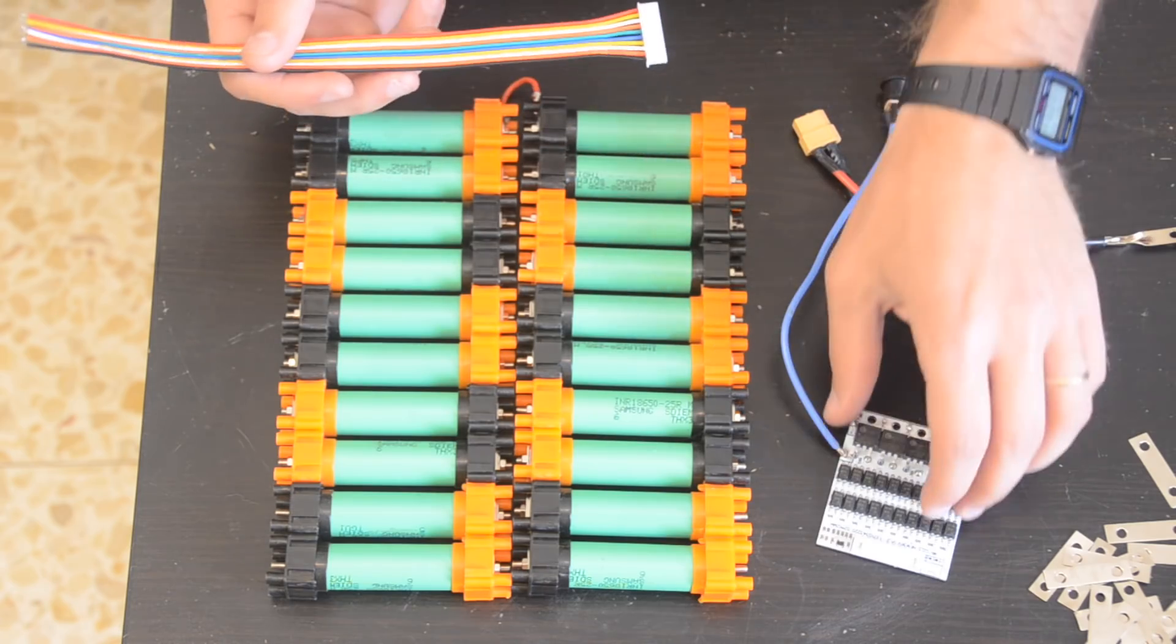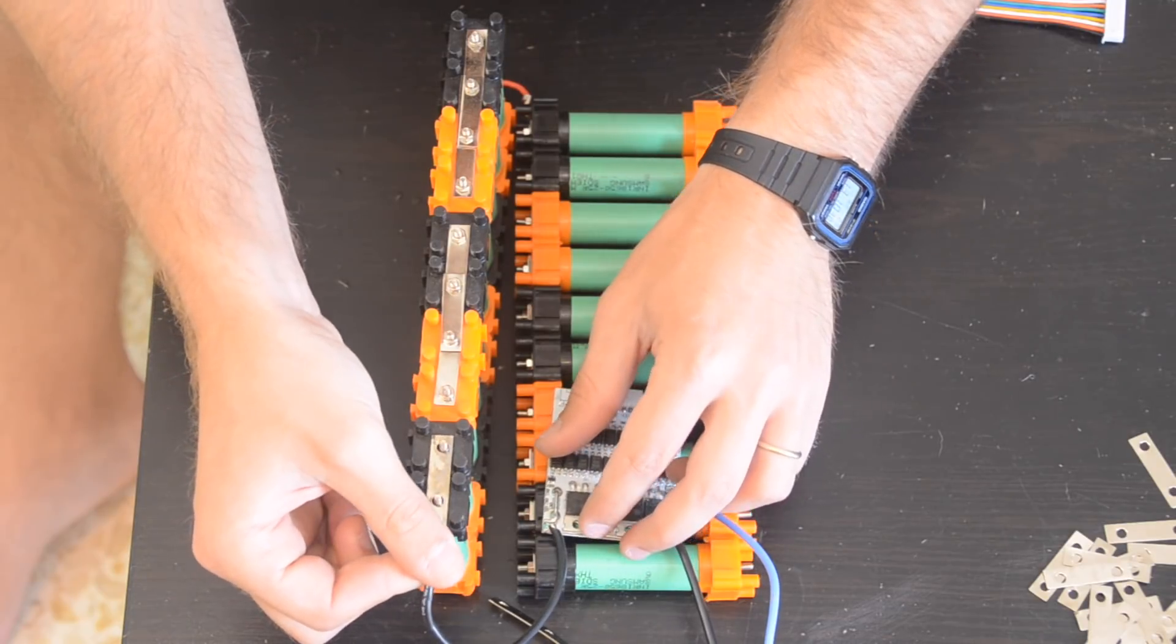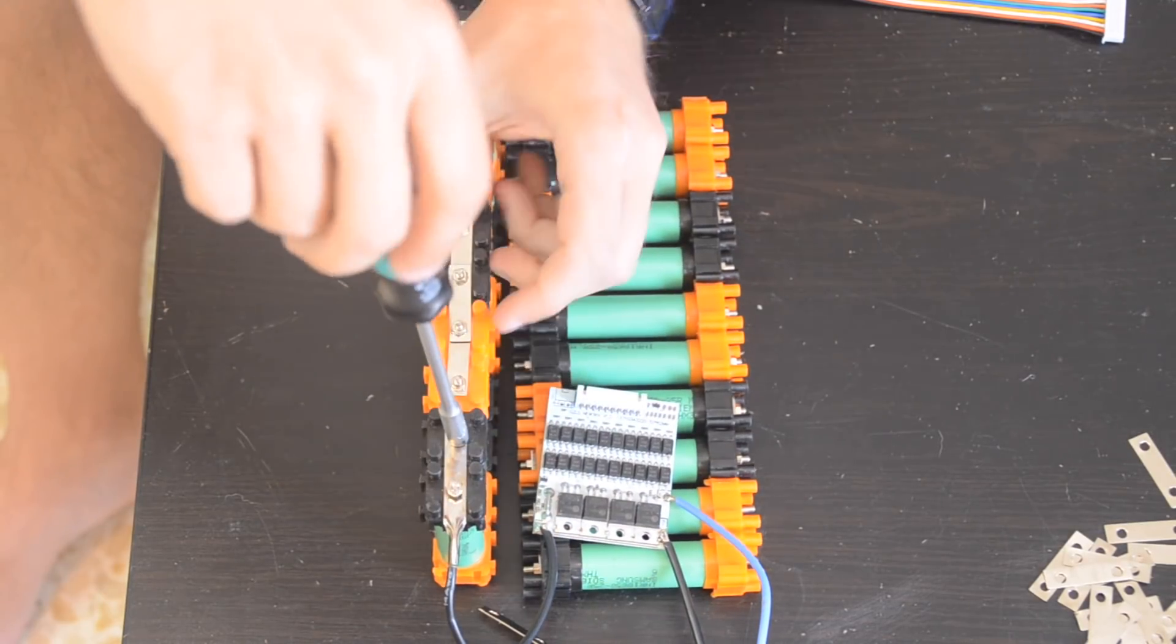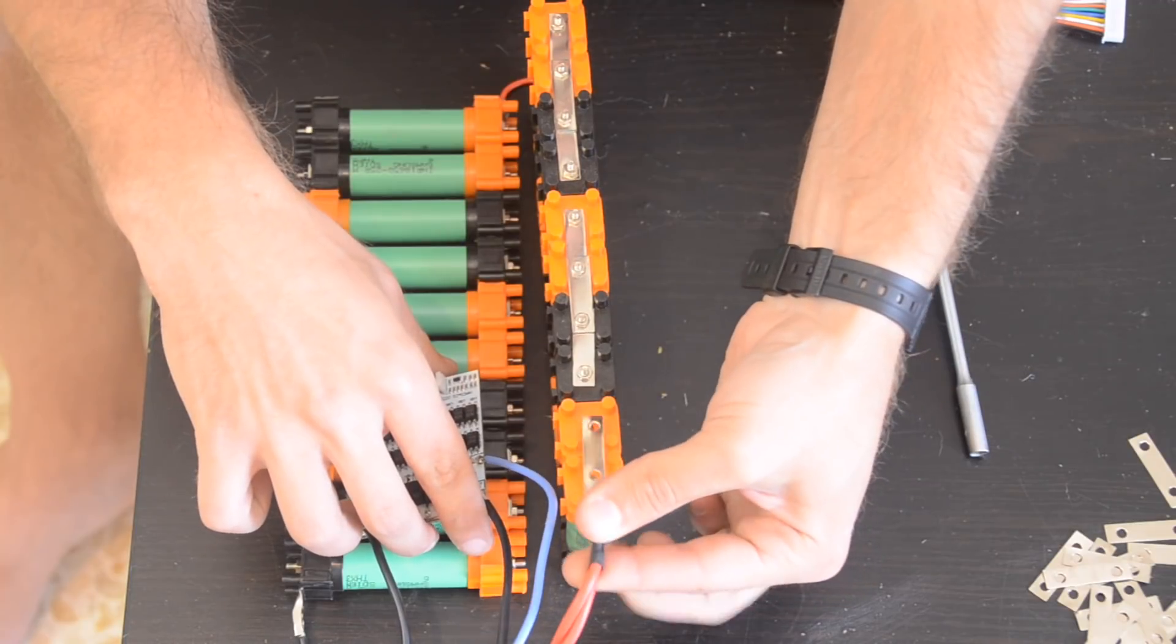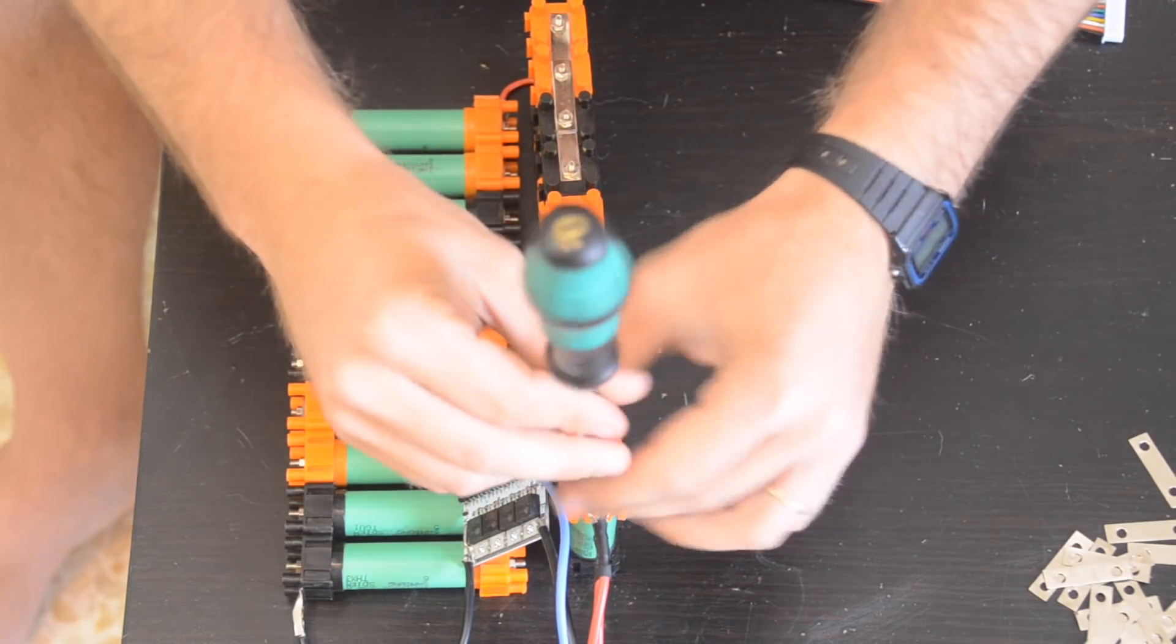Okay, now we can start connecting. I'll start by connecting the B minus wire from the BMS to the minus 1 terminal of the entire battery pack. Then I'll connect the positive charge and discharge wires to the positive 10 terminal of the entire battery pack.